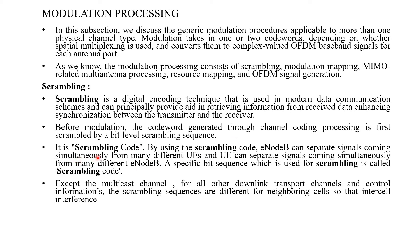Using the scrambling code, the E-Node can separate signals coming simultaneously from many different user equipments, and the user equipment can separate signals coming simultaneously from different E-Nodes. A specific bit sequence used for the scrambling is called the scrambling code. Except in the multicast channel, for all other downlink transport channels and control information, the scrambling sequences are different for neighboring cells so that inter-cell interference can be reduced.